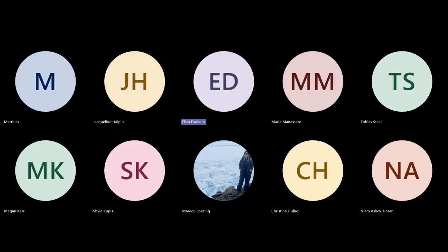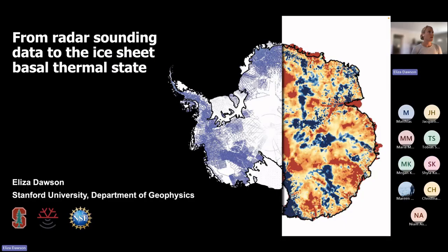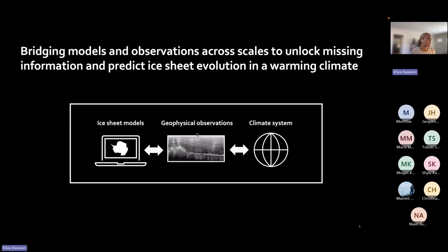I'm thinking about this problem and I'd love to turn it into a discussion — feel free to interrupt with clarifying questions as I go. My research broadly falls within this space where I work between models and observations to bridge both areas across different scales, to unlock missing information about the ice sheet subsurface. Today we'll focus on the geophysical observation space using radar data and my recent paper on how we can use radar data to map the basal thermal state.